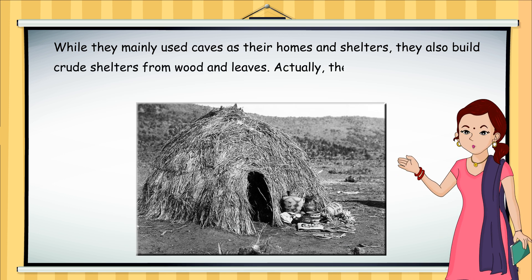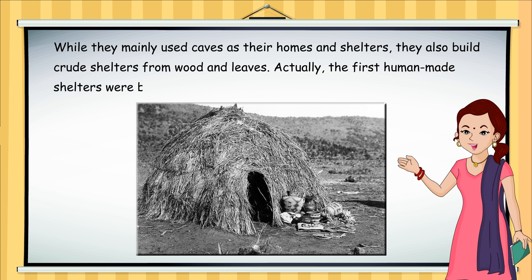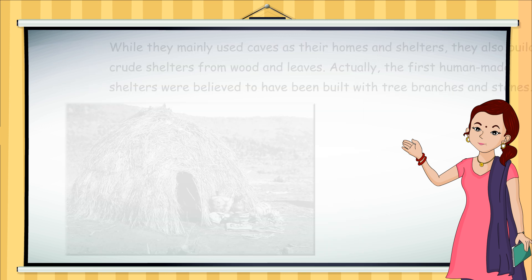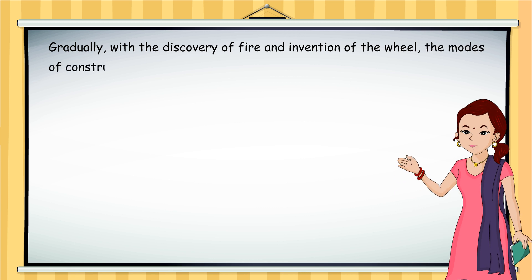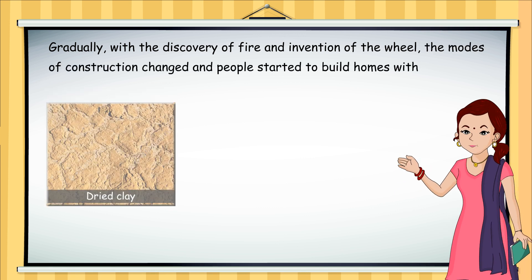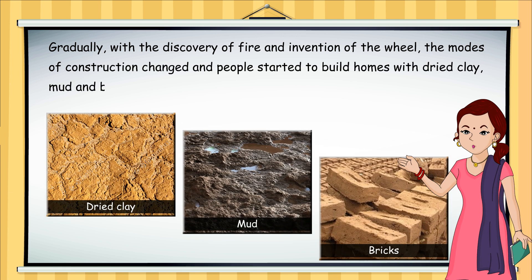Actually, the first human-made shelters were believed to have been built with tree branches and stones. Gradually, with the discovery of fire and invention of the wheel, the modes of construction changed and people started to build homes with dried clay, mud and bricks.